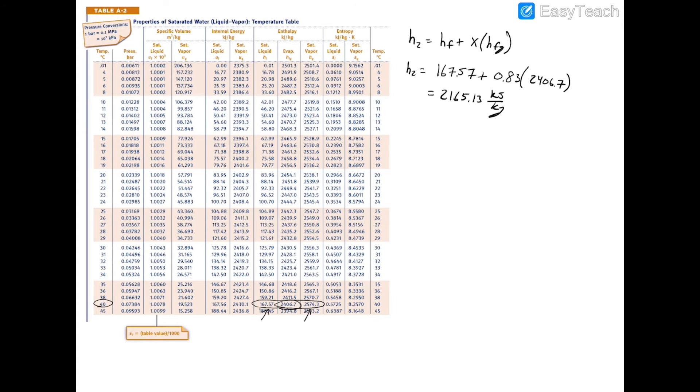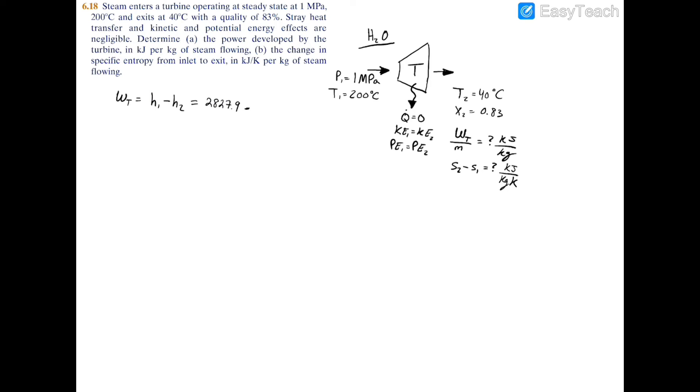Therefore h2 is going to equal 2165.13 kilojoules per kilogram. Now we can plug this back into our work equation and we'll have 2827.9 minus 2165.13, and the work of the turbine equals 662.77 kilojoules per kilogram.